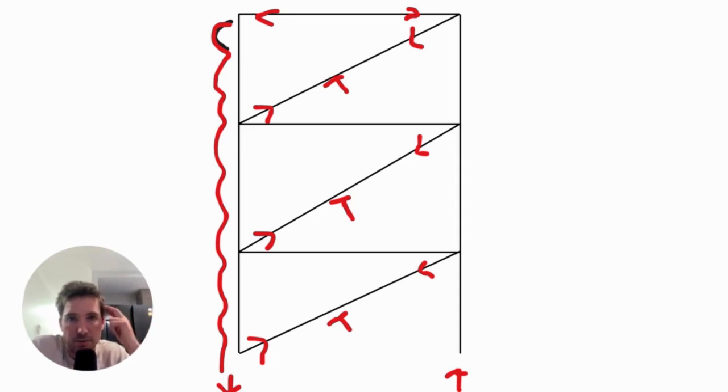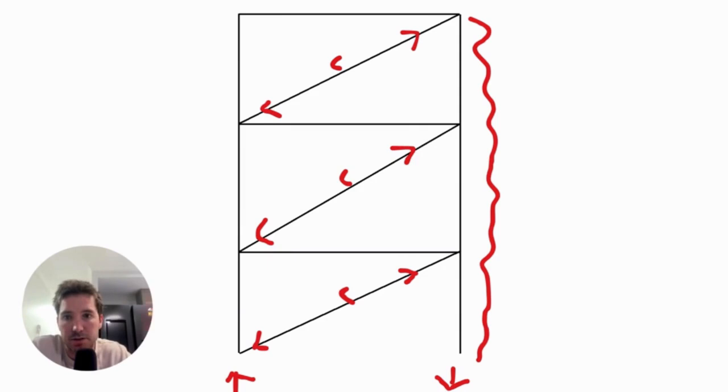This is called a strut system because when the load reverses the other way, those members need to be able to take compression. So that's part of the reason why braced structures lend themselves to steel members because they need to be good in both tension and compression, and that's what steel is pretty good for. So here you can see the load going from the left to the right, now all those members are in compression, so they need to be designed for your axial compression as well.